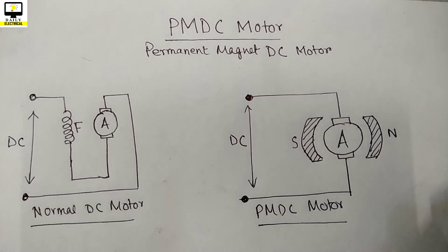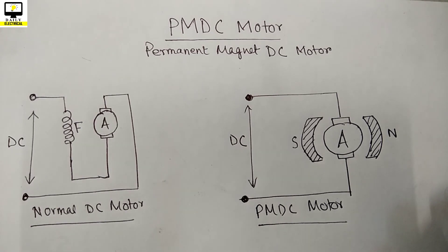There are two important parts in any DC motor: number one is the field, and number two is the armature. As per the electromagnetic law, whenever a current carrying conductor is placed inside a magnetic field, the conductor experiences a mechanical force which generates a torque, and for this torque the shaft starts rotating.